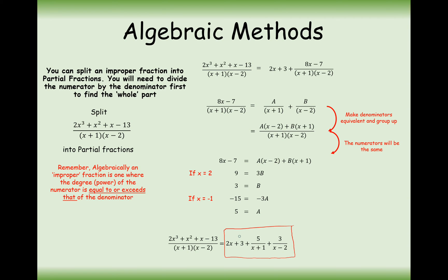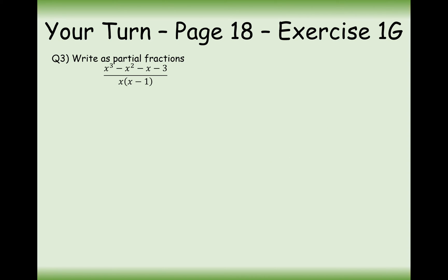In these types of questions you need to do a bit of algebraic division first, work out what your divisor is, work out what your remainder is, and your remainder goes on top of the fraction with the same denominator as before. Then you split that remainder over your denominator into partial fractions. Alright, your turn to have some practice — pause the video and try this question.